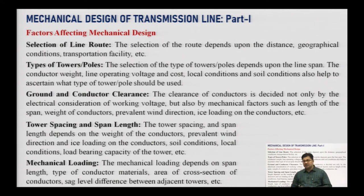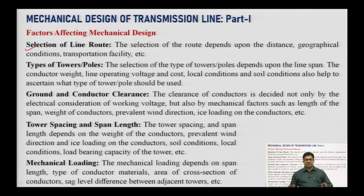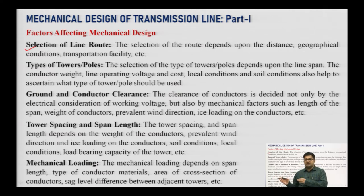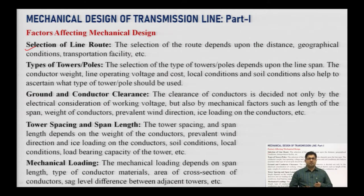Now, what are the factors that affect the mechanical design? The first factor is the selection of the line route. Transmission lines cover a maximum geographical area — from one end to another — which may include hilly areas, urban areas, and river beds. This variety of geographical structure along the route is a major factor affecting the mechanical design.